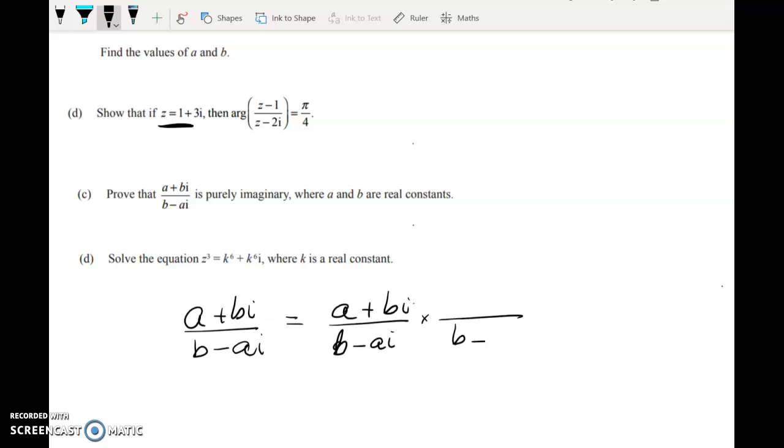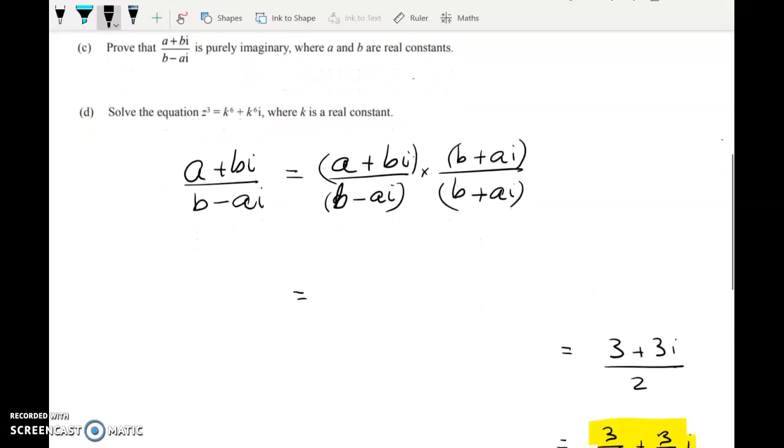Working first with the denominator, we get b squared minus a b i plus a b i minus i squared a squared. And in the numerator, we get a b plus b squared i plus a squared i minus a b.